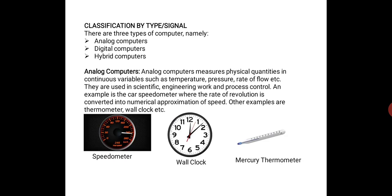We shall look at each of these parameters one after the other. Classification by type or signal — this has to do with how the data received by the computer is being processed. There are three types of computers, namely: one, analog computers; two, digital computers; three, hybrid computers.